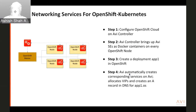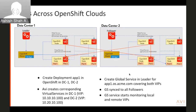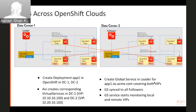For GSLB, same thing — you deploy app one in data center one and data center two. Avi automatically creates the corresponding local VIPs, automatically creates the global service for GSLB covering both VIPs, automatically syncs that to all followers, and starts health monitoring the local VIPs. Even for GSLB, it's zero touch. The controller completely manages everything from service discovery through DNS, traffic routing, and high availability.